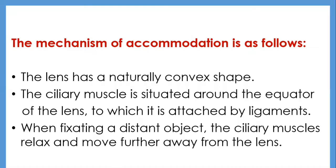The mechanisms of accommodation: first, the lens has a natural convex shape, held in place by a capsule and a muscle known as the ciliary muscle. Second, the ciliary muscle is situated around the equator of the lens, attached by ligaments. When a near object is fixated, the ciliary muscle contracts and moves closer to the lens in a sphincter-like action, reducing tension in the ligaments and permitting the lens to adopt its natural convex shape, increasing its refractive power. When fixating a distant object, the ciliary muscles relax and move further away, increasing tension so the lens is pulled into a flatter shape with less refractive power.